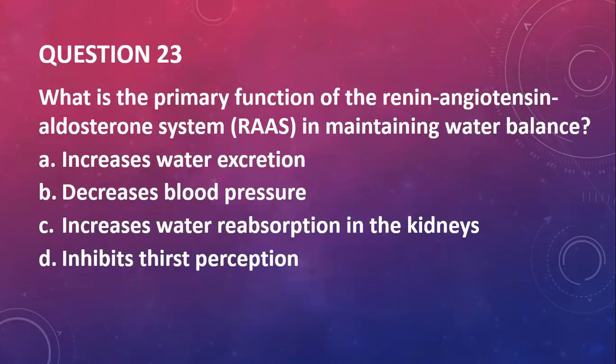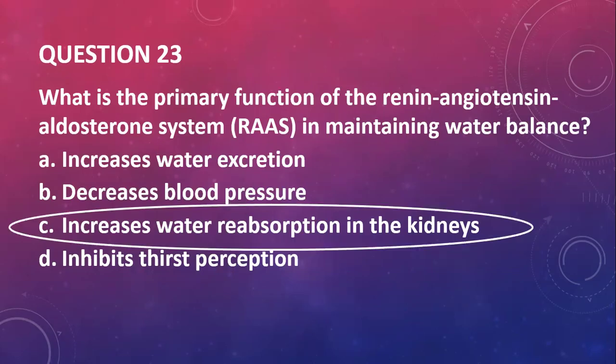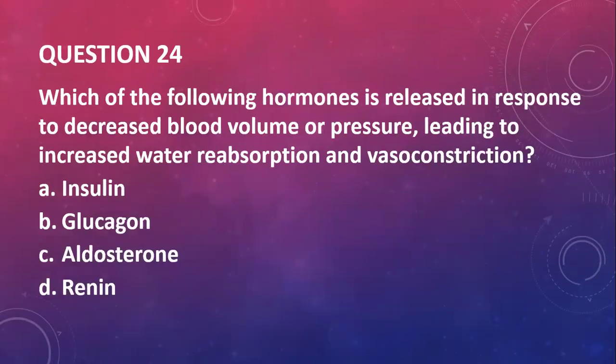Question twenty-two: which mechanism plays a role in regulating water balance by controlling thirst perception? Thirst centers need osmoreceptors to pick up that particular perception before sending it to the brain. So that will be our answer, osmoreceptor stimulation.